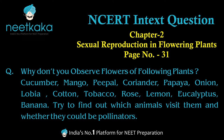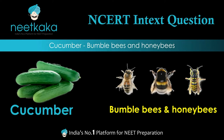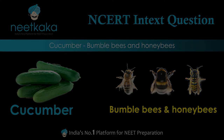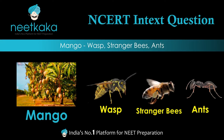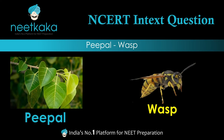In cucumber, pollination occurs through bumble bees and honey bees. The pollinators of mango are wasps, flies, stingless bees, and even ants, which are the main pollinators of mango.